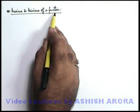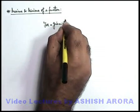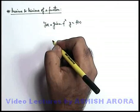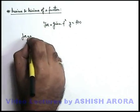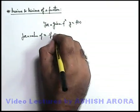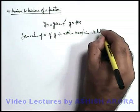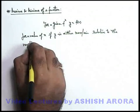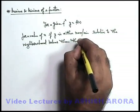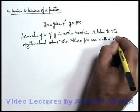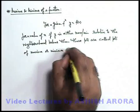Dear students, let's discuss the concept of maxima and minima of a function. Always remember that for a given function y = f(x), if for a particular value of x, the value of y is either maximum or minimum relative to the neighborhood values, then these points are called points of maxima or minima of the function.